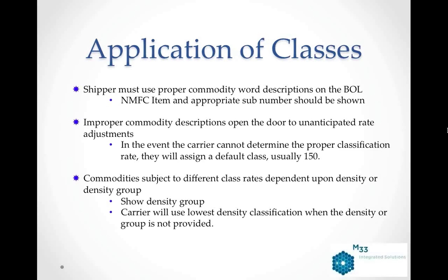Regarding application of classes: the shipper must use proper commodity word descriptions on the BOL. The NMFC item and appropriate sub number should be shown. Improper commodity descriptions open the door to unanticipated rate adjustments. If the carrier cannot determine the proper classification, they will assign a default class, which is usually 150. Commodities are subject to different class rates dependent upon density or density group, so show your density group. The carrier will use the lowest density classification when the density or group is not provided.